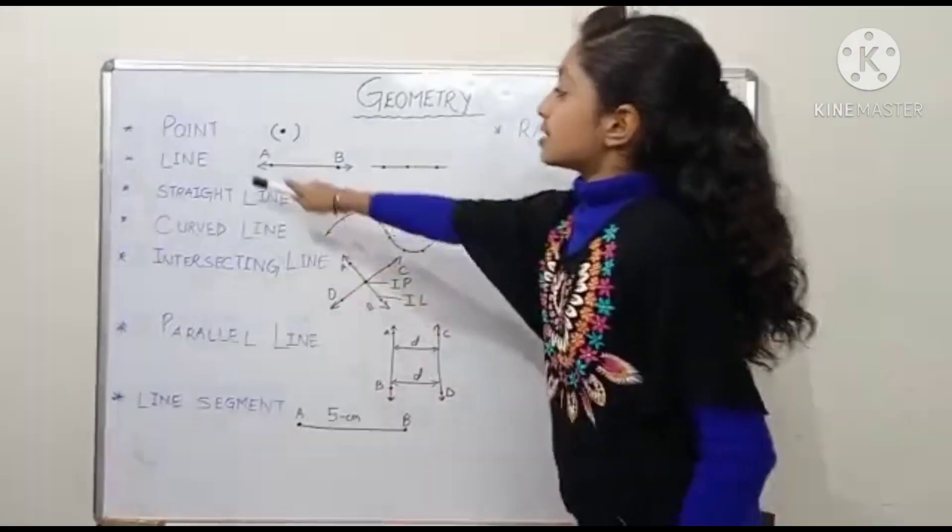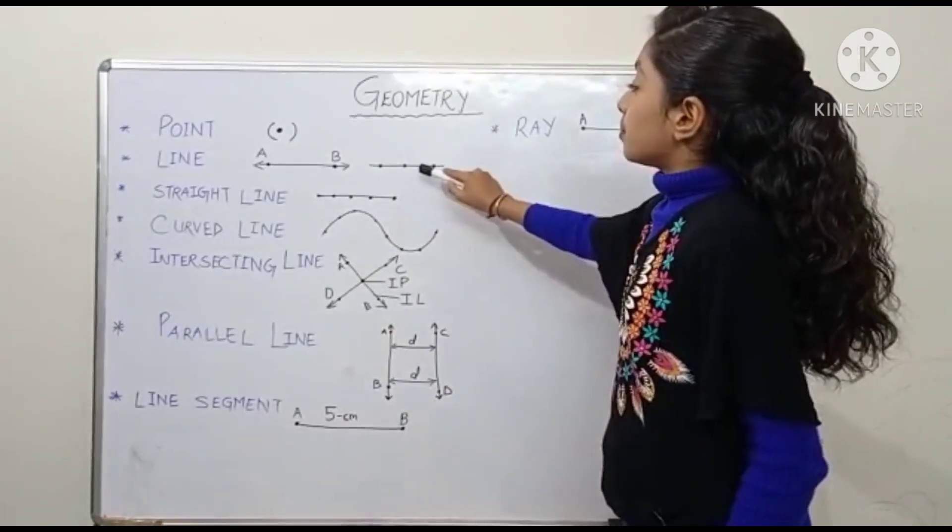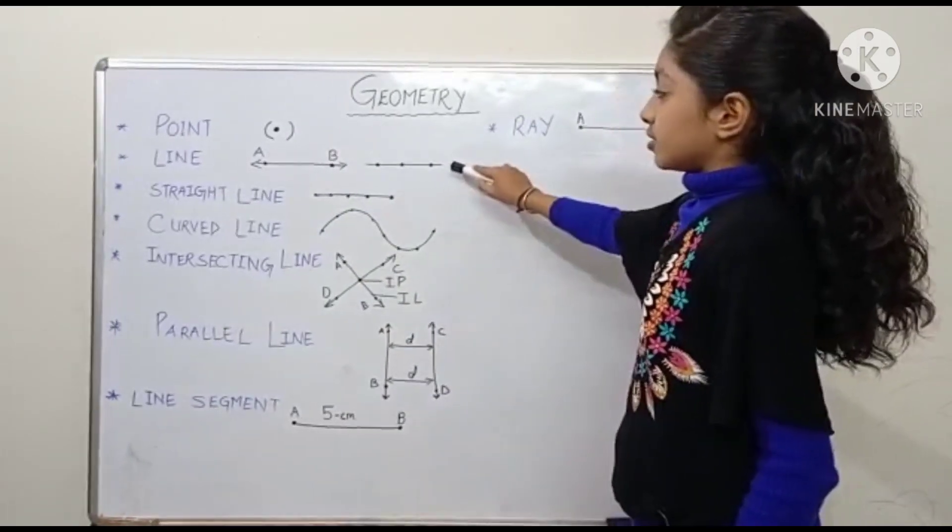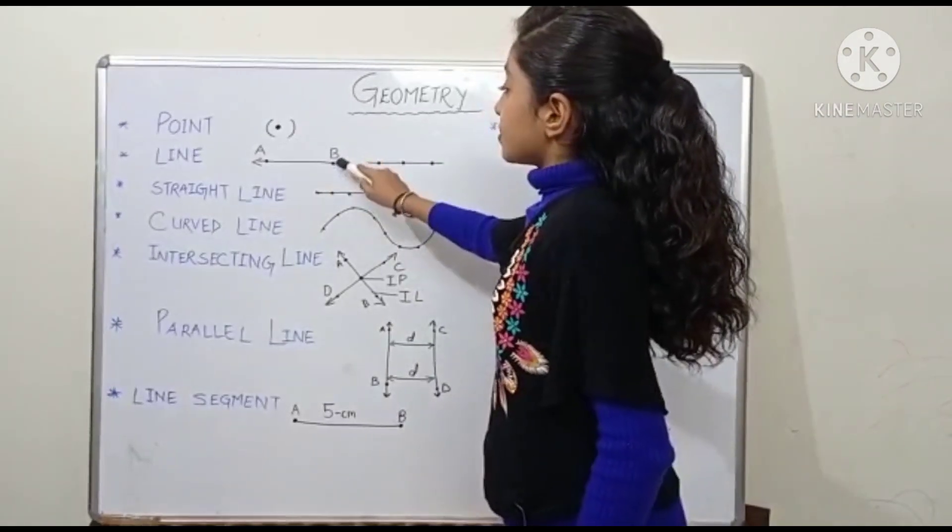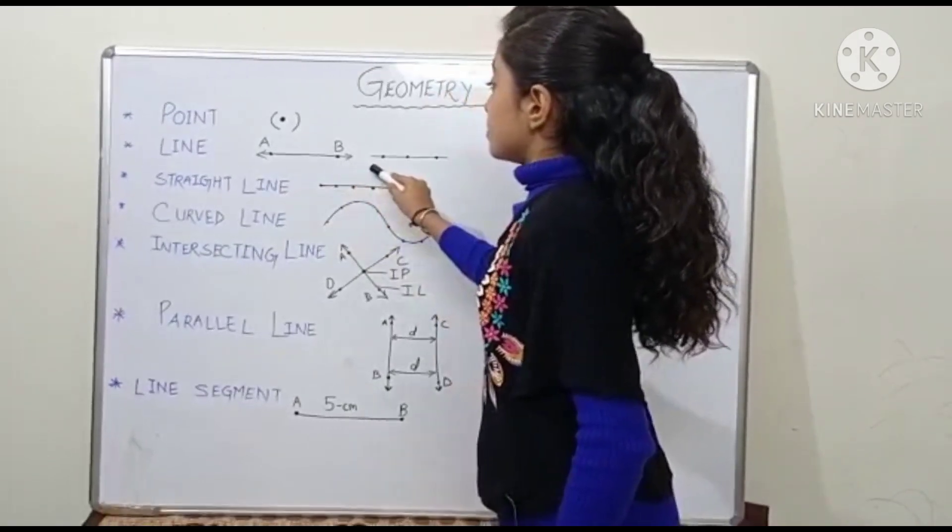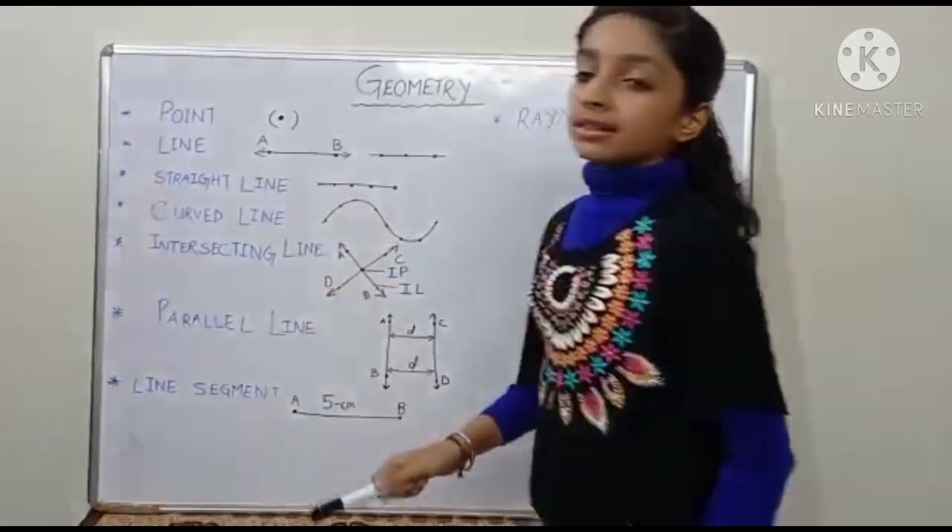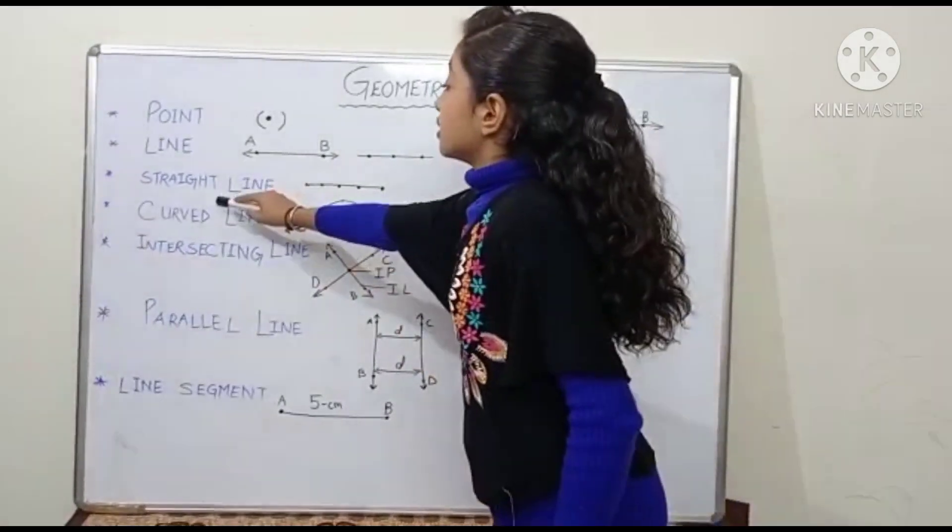Now we will discuss line. So friends, line is formed by joining the points together. Here is point A and here is point B. So the line can be extended towards A and towards B. Line is indefinite.